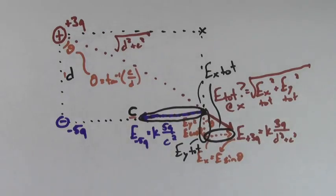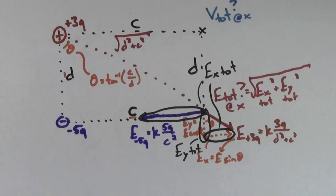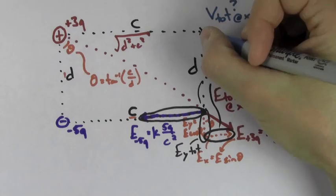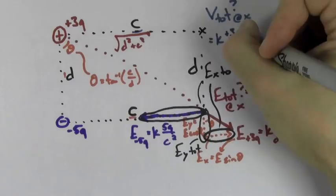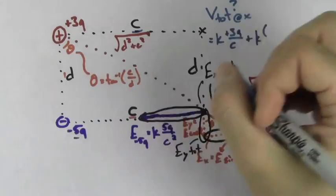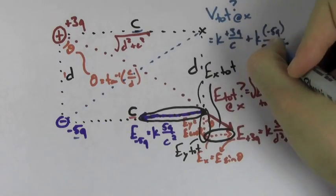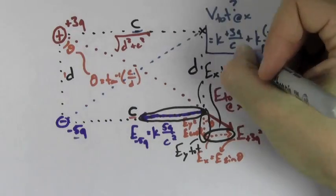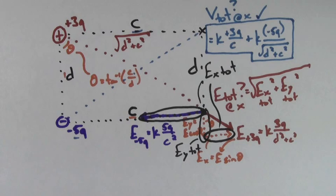If you wanted to find the total electric potential at the other corner of the rectangle, it would be much easier since the electric potential is not a vector and has no components. Just use KQ over R to find the contribution that each charge makes at that point in space, including negative signs if there are any negative charges, and you literally just add up each contribution. No directions, no vectors, no angles, no components.